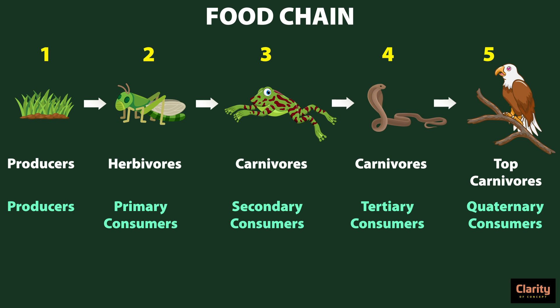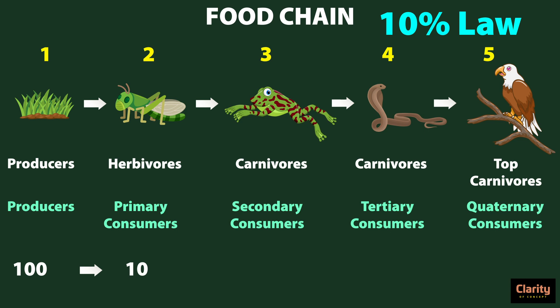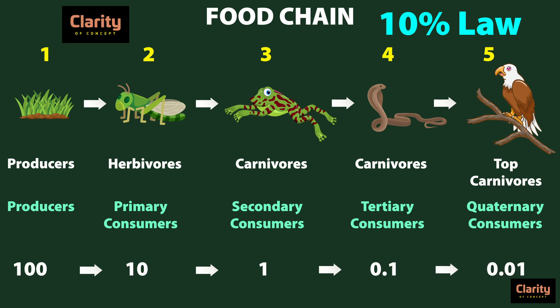It is very rare for trophic level 6 and above to exist. This is because of the 10% law. According to this law, when energy transfer takes place from one trophic level to another, only 10% of energy is available for the next trophic level. The other 90% of energy is lost as heat and in respiration. For example, if energy received from the sun is 100%, the useful energy stored by autotrophs is only 10% of it. Since only 10% of received energy is available for subsequent levels, available energy goes on decreasing as we move to higher trophic levels. Therefore, trophic levels higher than 6 generally do not exist.